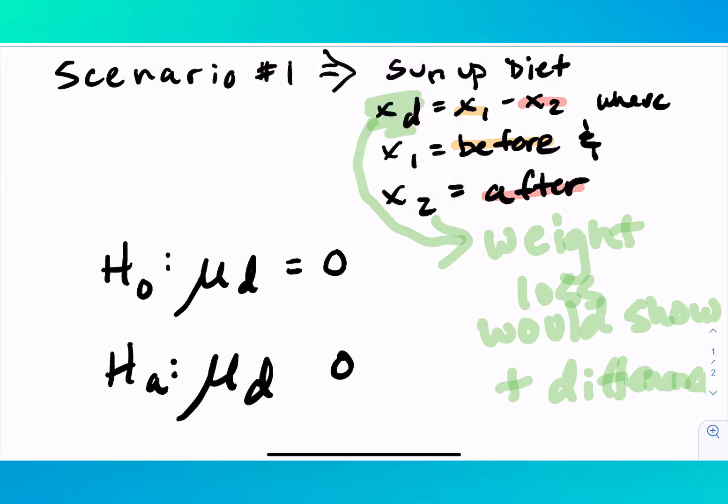Now remember, direction of subtraction is extremely important in these scenarios because it affects the sign or the direction of the sign. So here, because we would want to see it's positive, it's mu sub d is greater than zero. And that means this is going to be highlighting on that side of the test statistic. So it's pointing to the right.